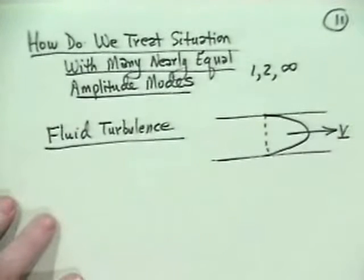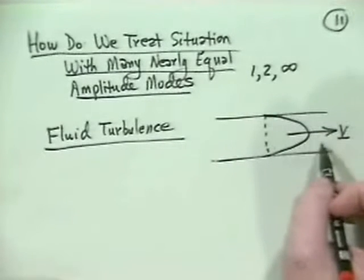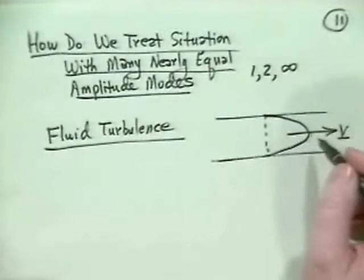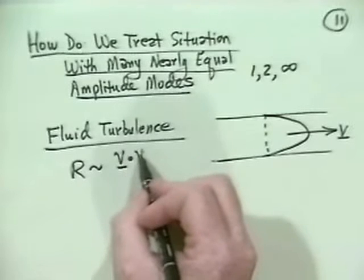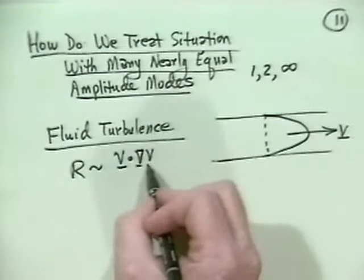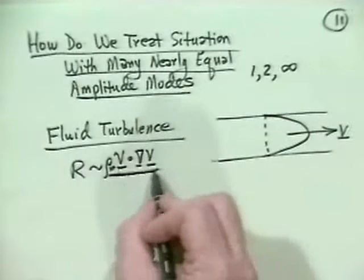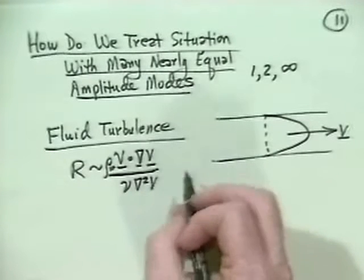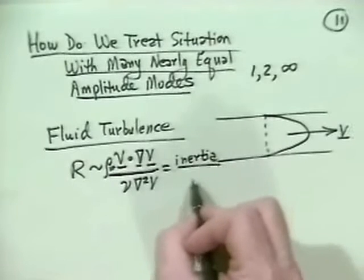How do we calculate what goes on in there? What we know happens is that, roughly speaking, if the Reynolds number is high enough, and the Reynolds number here is the ratio, basically, of the magnitude of the inertia term. It's basically the ratio of the inertia term, V dot del V times the mass density, divided by the viscosity or the dissipation, which is a sort of nu del squared V, so it's inertia or nonlinearity over dissipation.